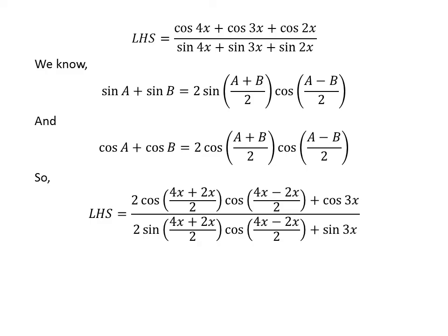Adding the cosine of 3x term in the numerator and 2 times sine of (4x plus 2x) upon 2 times cosine of (4x minus 2x) upon 2 plus sine of 3x in the denominator.